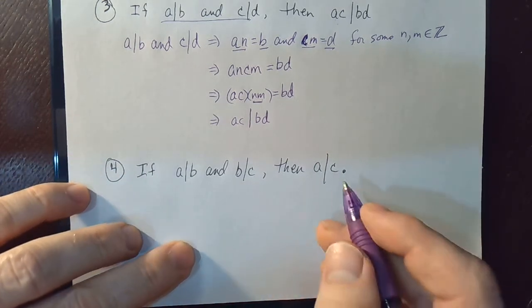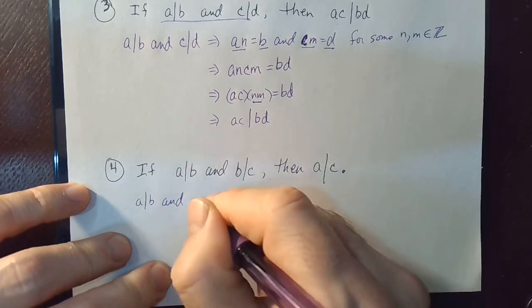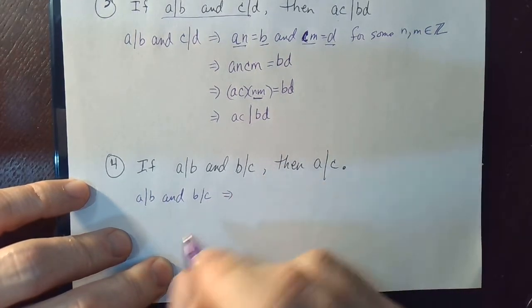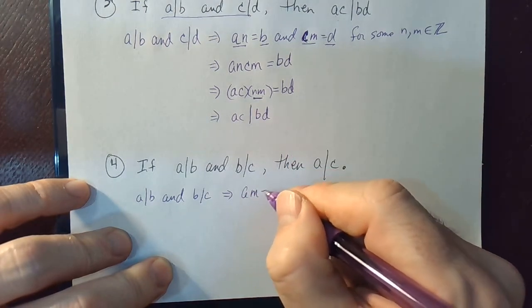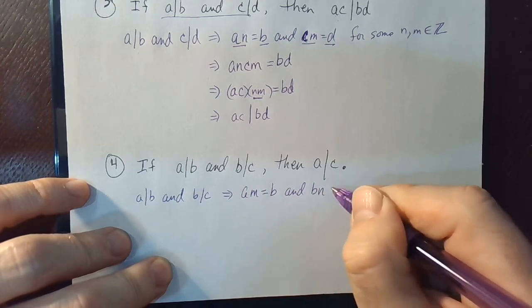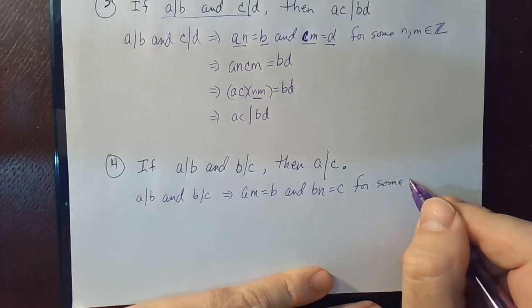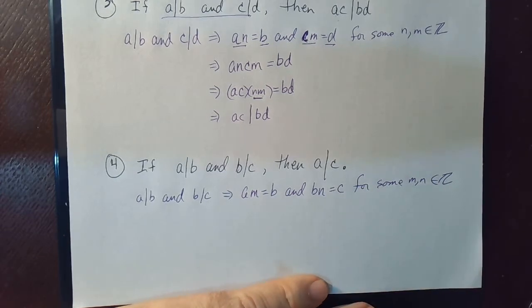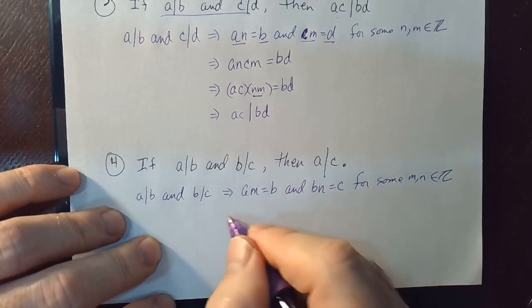Alright, so, let's write down that a divides b and b divides c. That tells us, by the definition of divides, that tells us that a, m is equal to b and b, n is equal to c. That's going to be equal to b. For sum m and n. For sum m and n. In the set of integers. Okay, so what does that tell us?